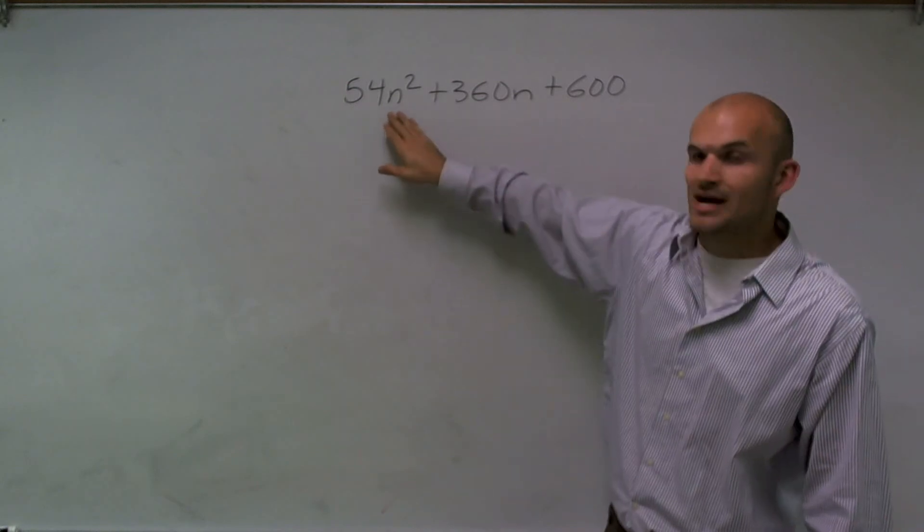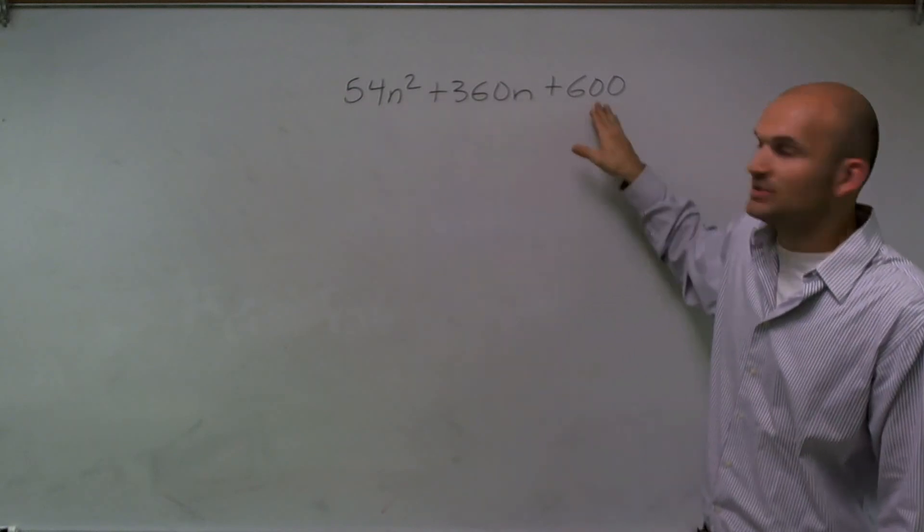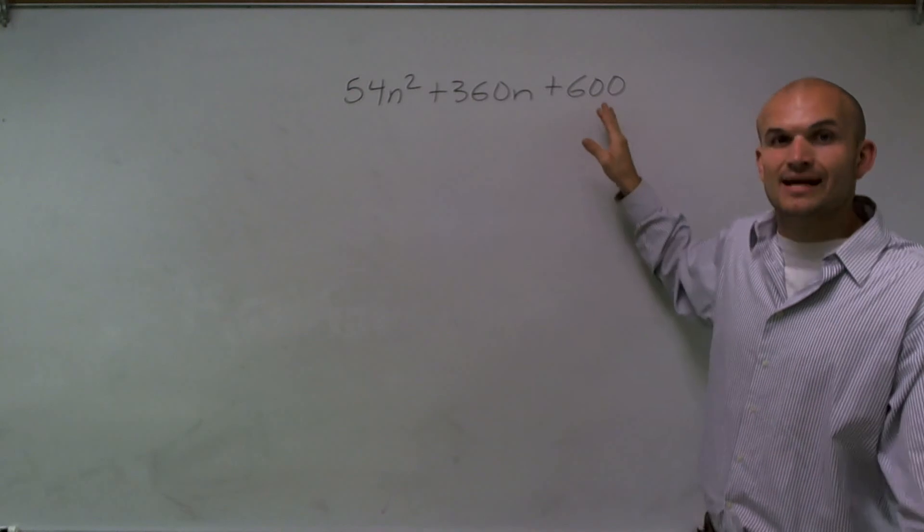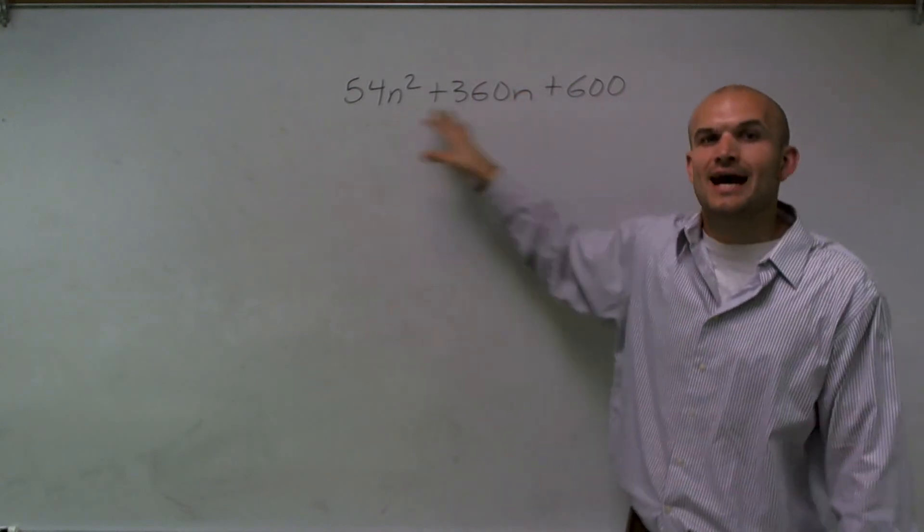So if I look at my n here, I have an n squared and n, but since 600, this term does not have an n, I can't factor an n out of this trinomial.